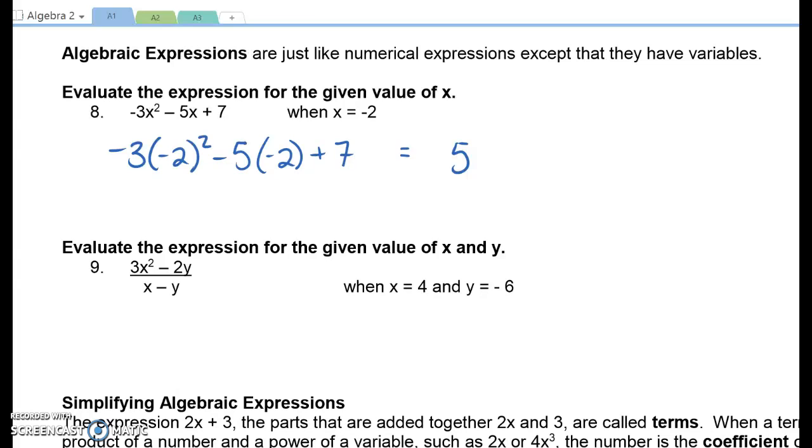When you have an expression with a numerator and a denominator, you actually have two sets of parentheses, even if you don't see parentheses written in there. The numerator is a grouping. The denominator is a grouping. So really, you kind of want to think of this as parentheses divided by parentheses. So we are going to put four in place of the x's.